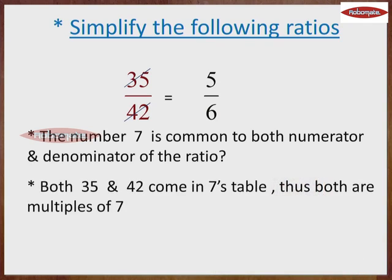Also, the number 35 and 42 both come in 7's table. So, they both are multiples of 7.